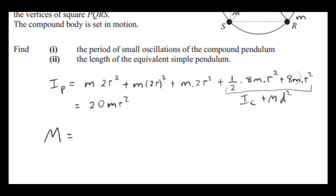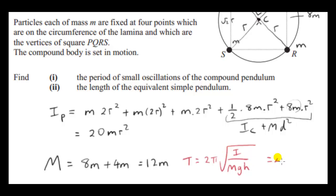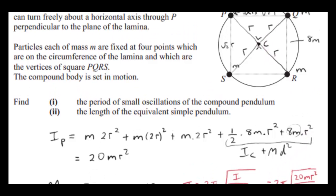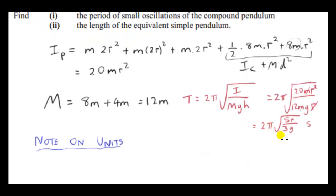The total mass of the compound pendulum is the disc mass 8M plus four point masses 4M, giving 12M. Plugging into the period formula with I = 20MR², total mass = 12M, and H = R (distance from center of mass to P), we simplify to get T = 2π√(20R/12g) = 2π√(5R/3g). The units check out: I is in kg·m², M in kg, G in m/s², H in meters, giving seconds.